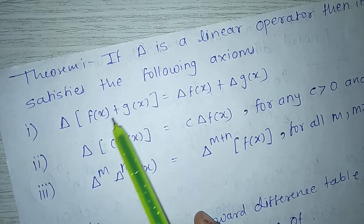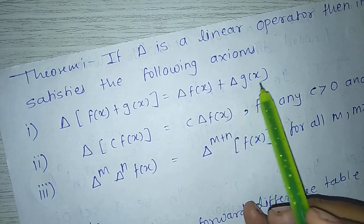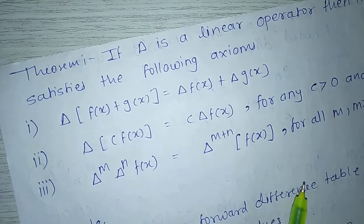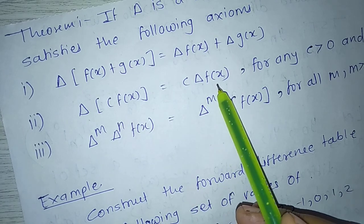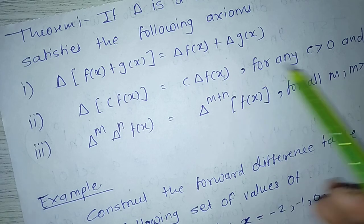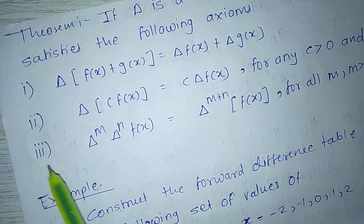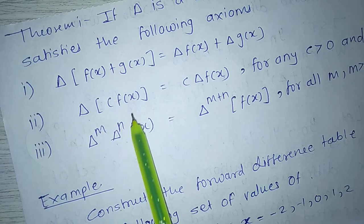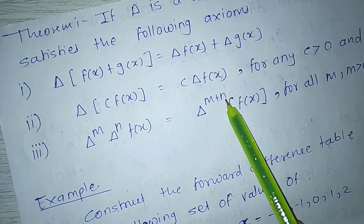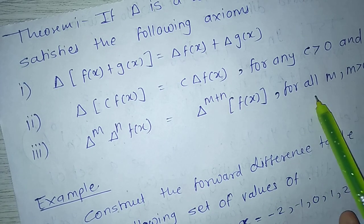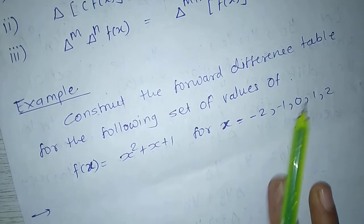First, delta of f(x) plus g(x) equals delta f(x) plus delta g(x). Second, delta of c into f(x) equals c into delta f(x) for any c greater than 0. And third, delta raised to m into delta raised to n of f(x) equals delta raised to m plus n into f(x) for all m where m is greater than 0.